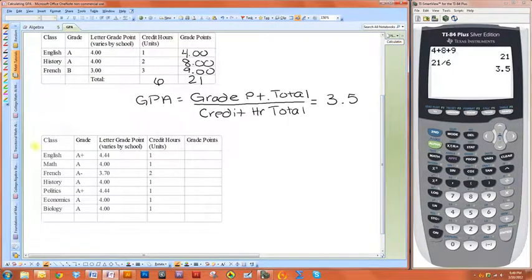So now the letter grade point is going to change depending on what school you go to. Most schools do four for A, three for B, but some schools have a 5.0 scale or something like that. In this example, we're going to use a slightly different letter grade point standard, where you have an A plus, which is a 4.4.